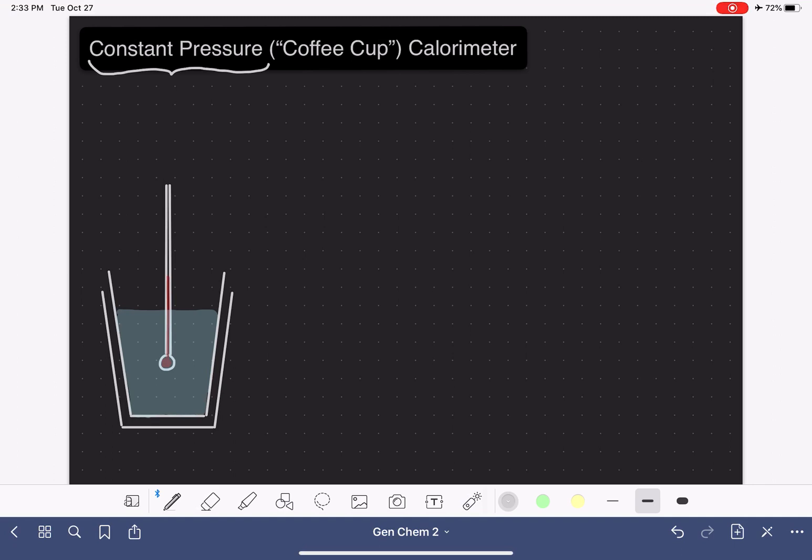Constant pressure simply means that there can be no increase or decrease in pressure. We cannot build up a collection of gases or create a vacuum. And this is possible only because our constant pressure calorimeters do not have a lid on them.